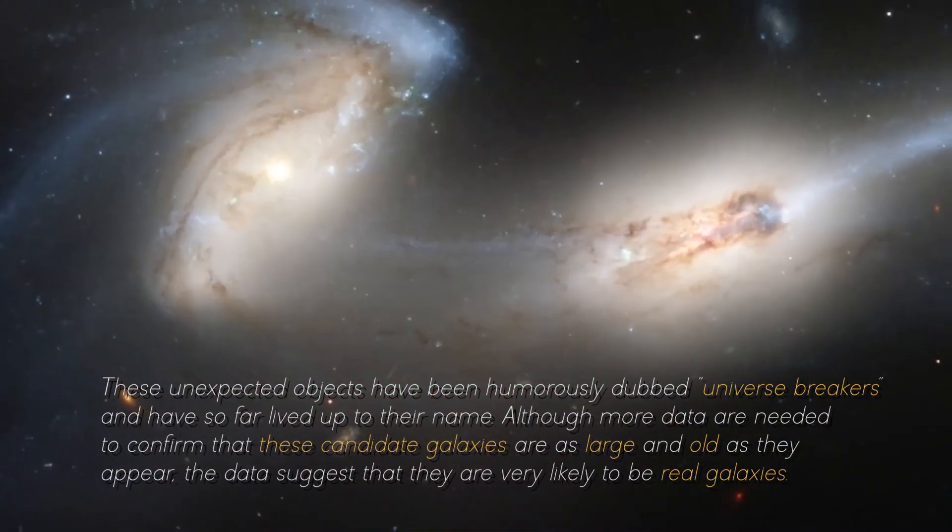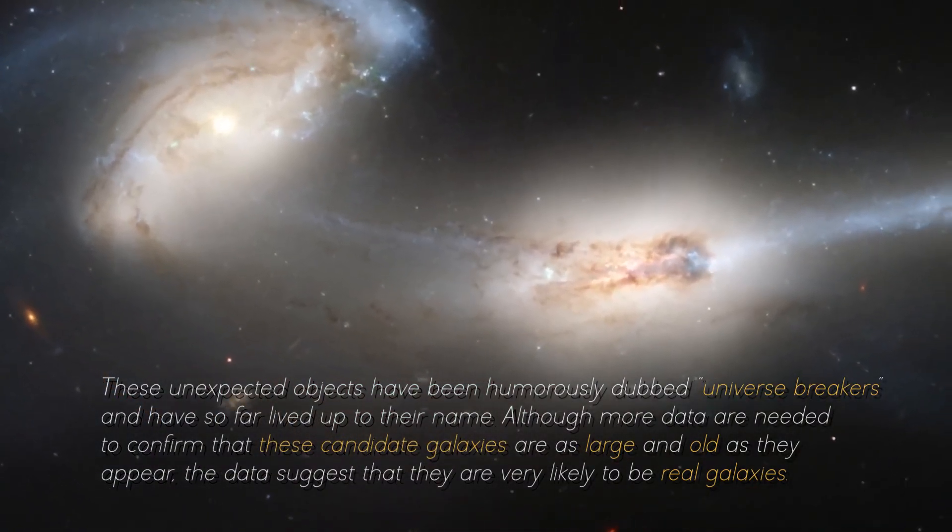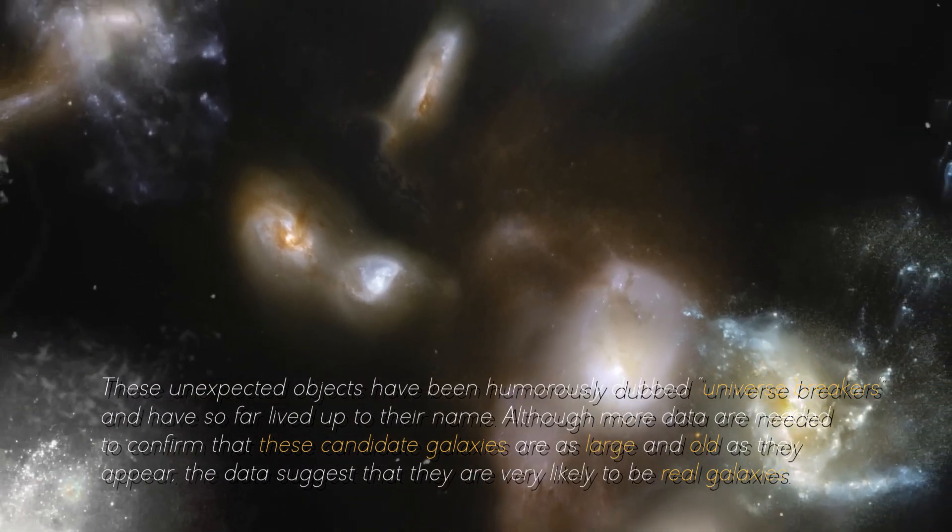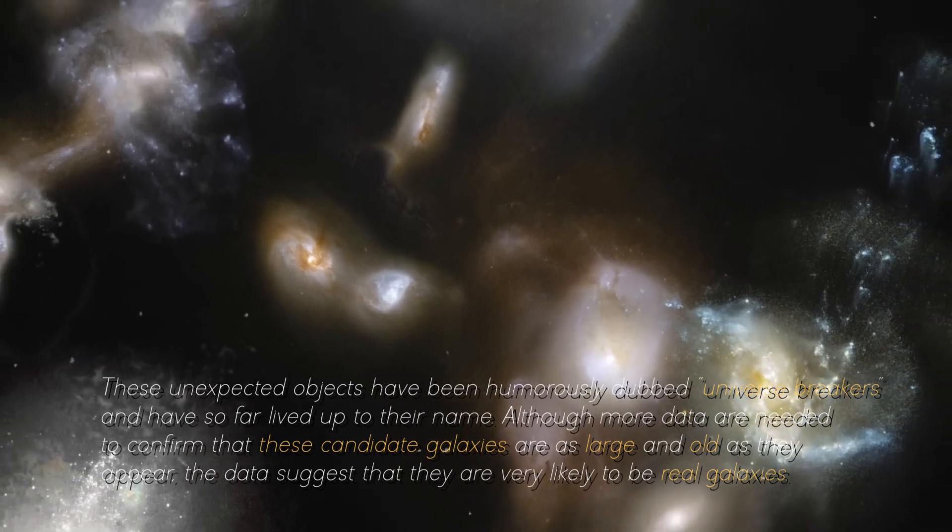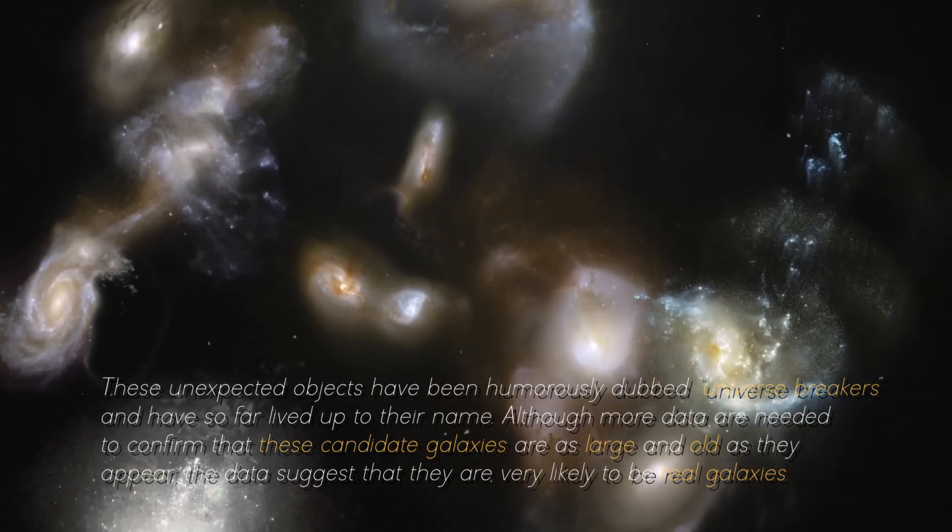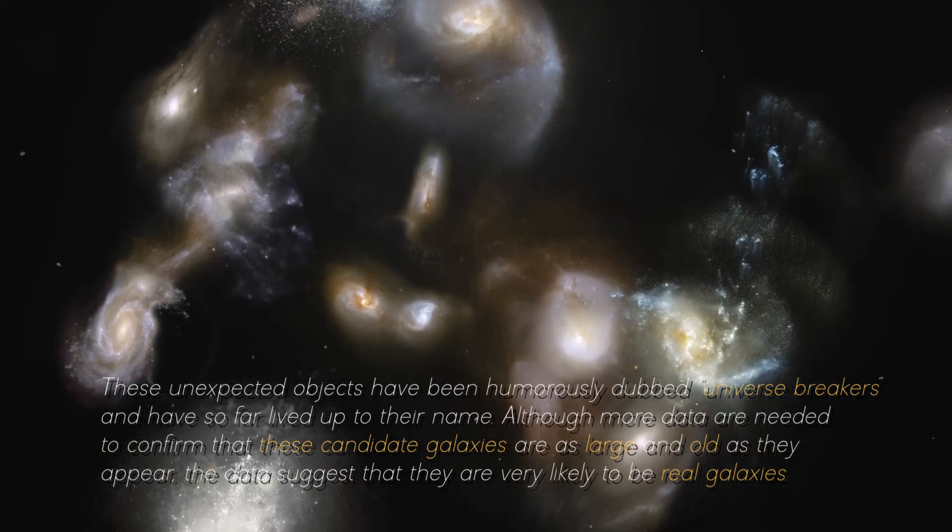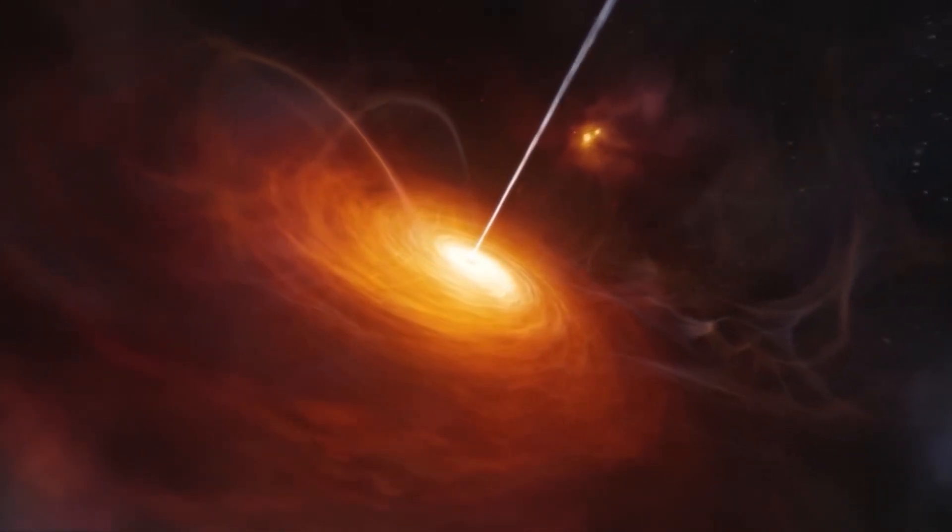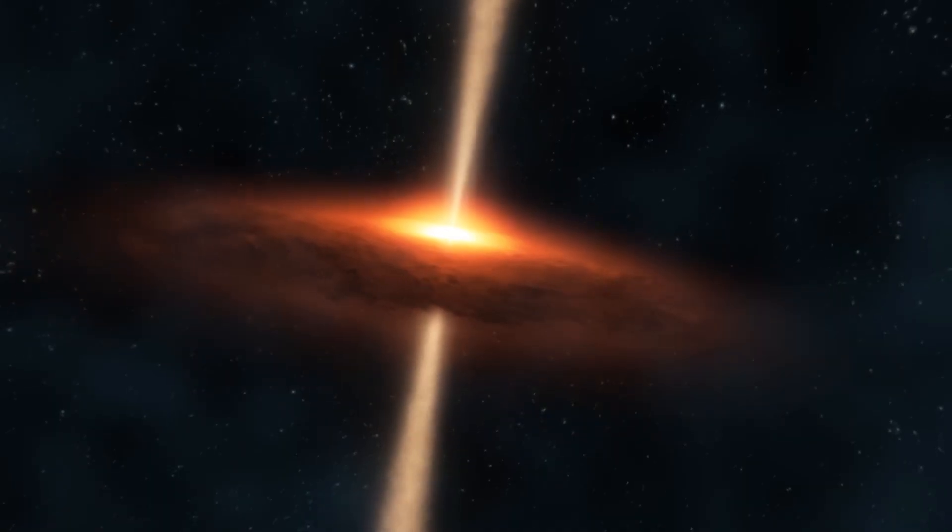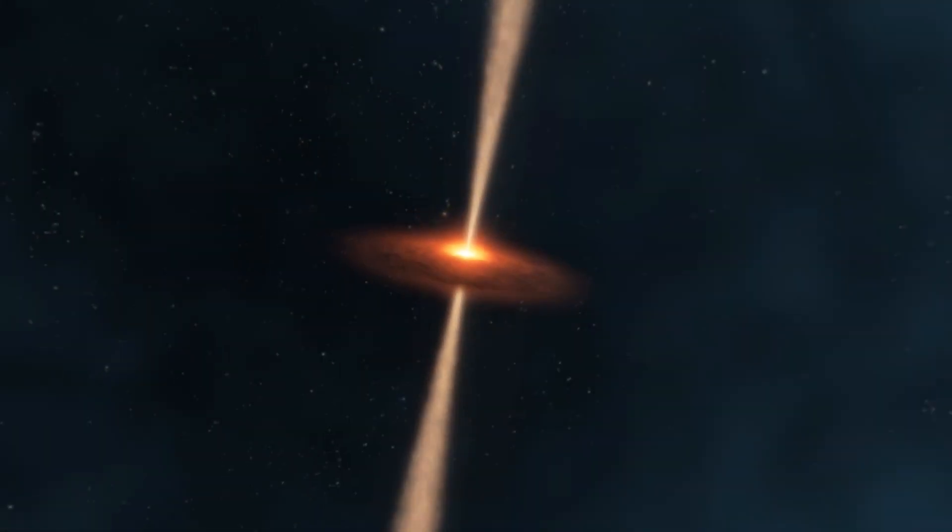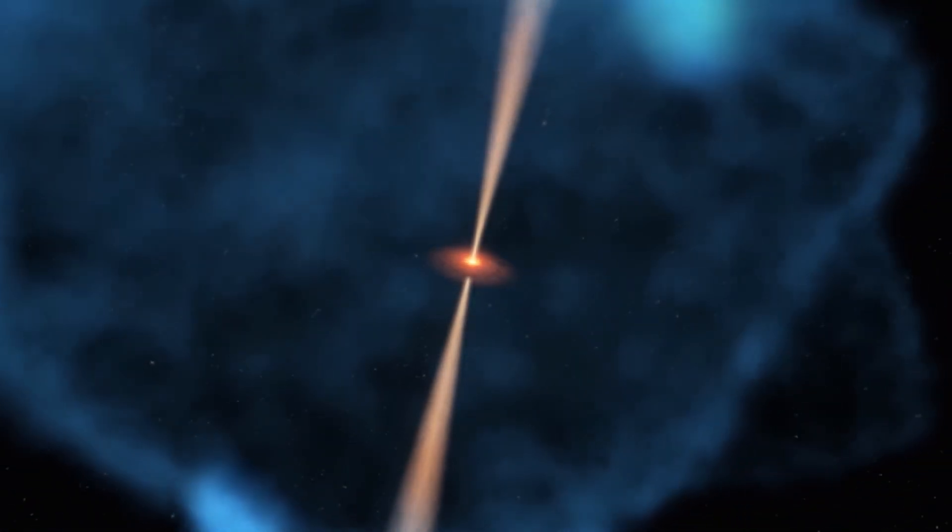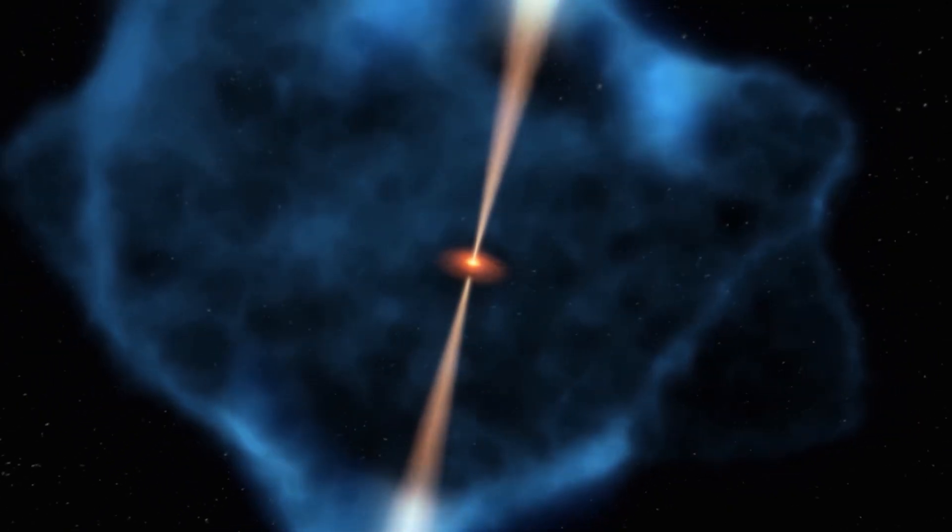These unexpected objects have been humorously dubbed universe breakers and have so far lived up to their name. Although more data are needed to confirm that these candidate galaxies are as large and old as they appear, the data suggests that they are very likely to be real galaxies. There is the possibility that some of these objects are obscured supermassive black holes, which is another interesting aspect to consider. However, the amount of mass discovered implies that the known mass of stars at this stage of the universe is up to 100 times larger than previously thought.